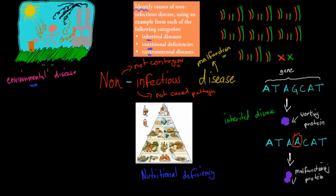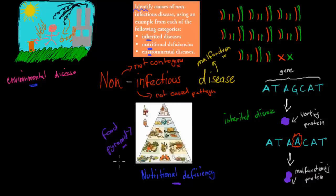Nutritional deficiency diseases are usually due to a lack of a vitamin, mineral, or protein in your diet. We need a balanced diet — represented by the food pyramid — to get different nutrients for normal body function. If you have a nutritional deficiency, you don't have enough of certain vitamins or minerals that these foods normally provide. We also need to discuss inherited diseases.